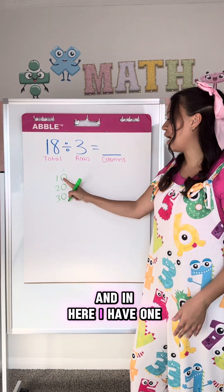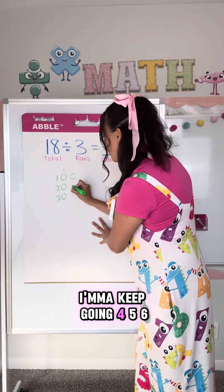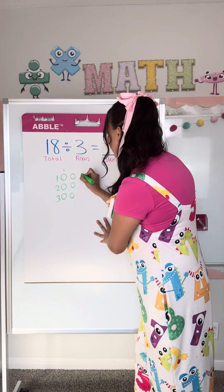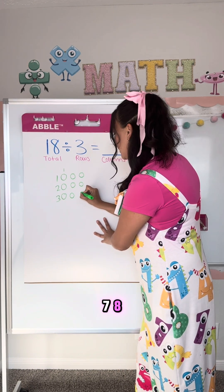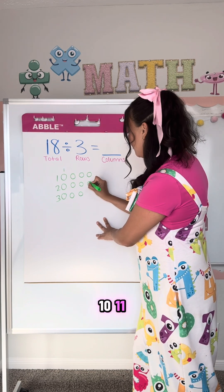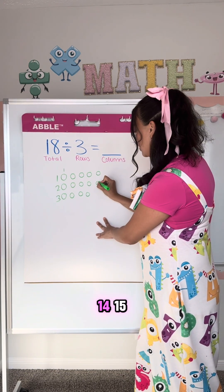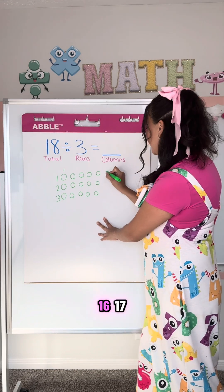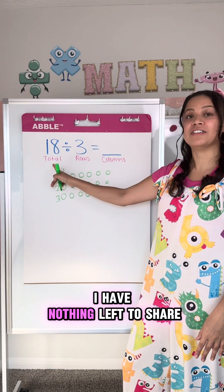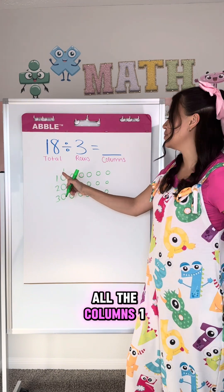One, and in here I have one, two, three. I'm going to keep going: four, five, six, seven, eight, nine, ten, eleven, twelve, thirteen, fourteen, fifteen, sixteen, seventeen, eighteen. Stop! I have nothing left to share. I got to my total. And now I'm going to label all the columns.